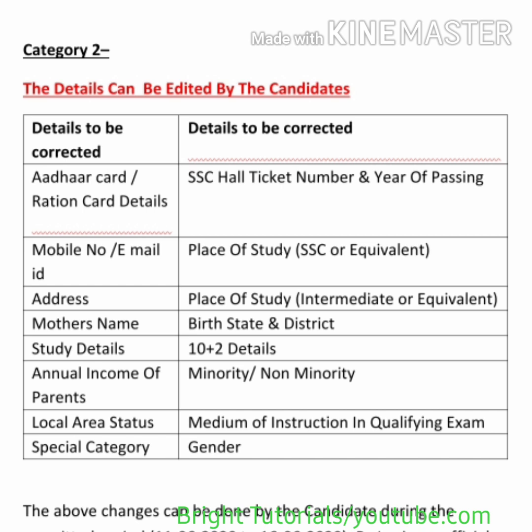Category 2 details can be edited by the candidates themselves by logging into their account on the official website of APM set or TSM set. These editable details include: Aadhaar card or ration card details, SSC hall ticket number and year of passing, mobile number or email ID, place of study of SSC, address, place of study of intermediate, mother's name, birth state and birth district, study details, 10+2 details, annual income of parents, minority or non-minority status, local area status, and medium of instruction in the qualifying examination, special category, and gender.